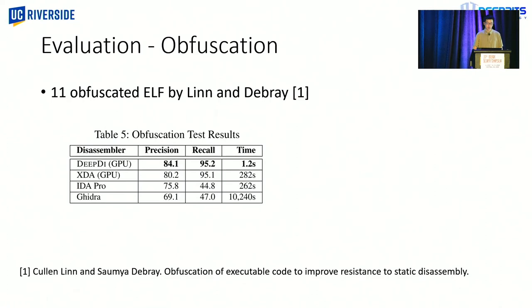And the third evaluation is against obfuscation. We use a tool that is designed to confuse linear and recursive disassembly. And this table shows our approach is superior in terms of accuracy and efficiency. And it also suggests that our approach is not affected by the increased code complexity.